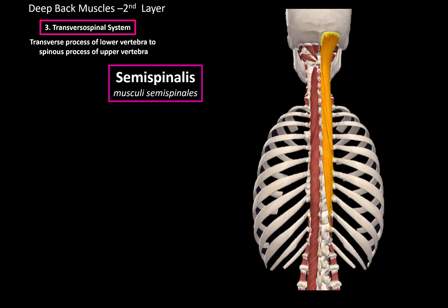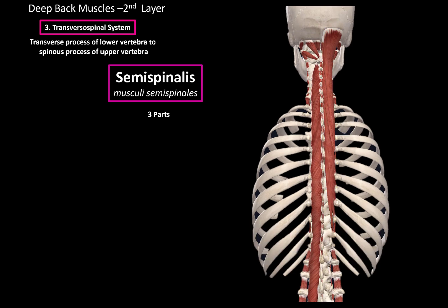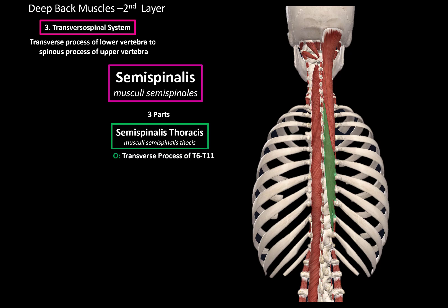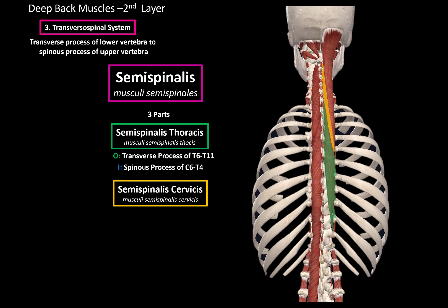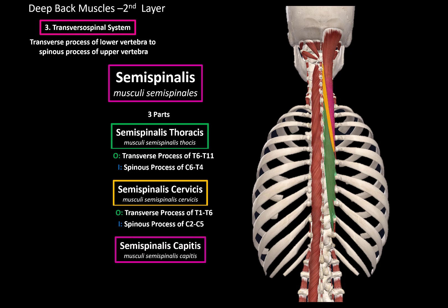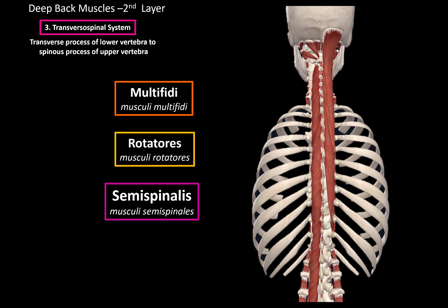Next we have the semispinalis, consisting of three parts. The semispinalis thoracis originates from the transverse process of T6 through T11 and inserts at the spinous process of C6 to T4. The semispinalis cervicis originates from the transverse process of T1 to T6 and inserts at the spinous process of C2 to C5. The semispinalis capitis originates from the transverse process of C4 to T6 and inserts at the occipital bone, between the inferior and superior nuchal line. So that was all the muscles of the transversospinal system, the second layer of the deep back muscles.